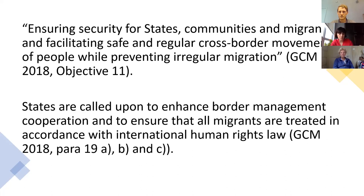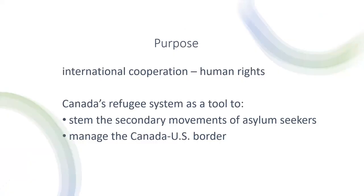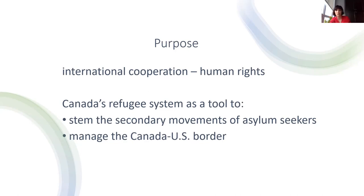In realizing this commitment, states are also called upon to enhance border management cooperation and to ensure that the human rights of migrants are protected. My aim in this presentation is to use some recent Canadian developments to discuss how these two objectives of the Global Compact on Migration — promoting international cooperation while at the same time protecting the human rights of migrants — are difficult to reconcile in the case of secondary migratory movements.